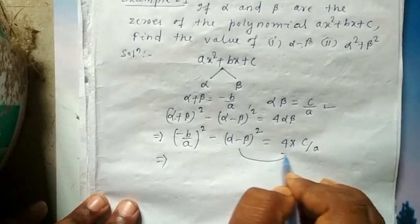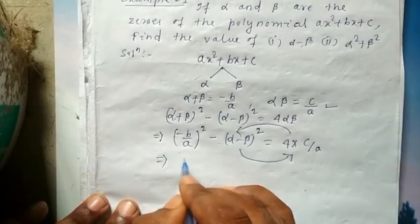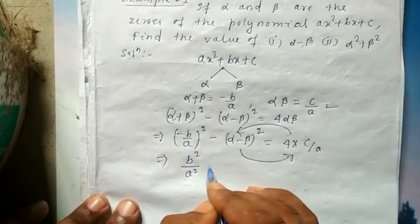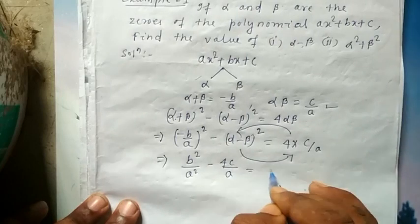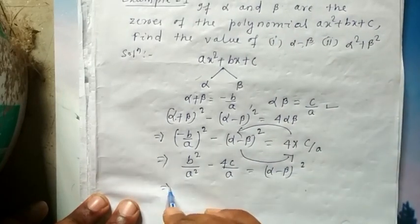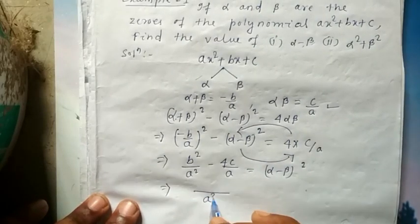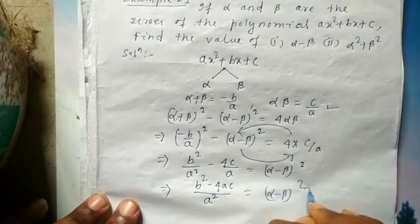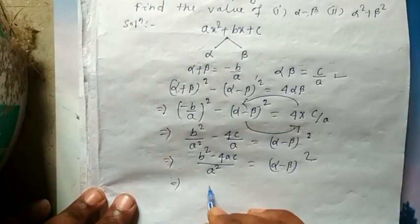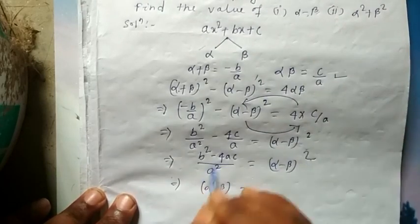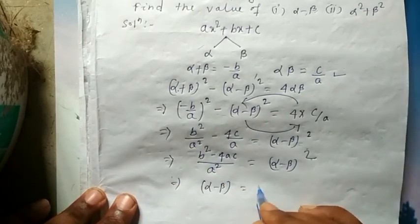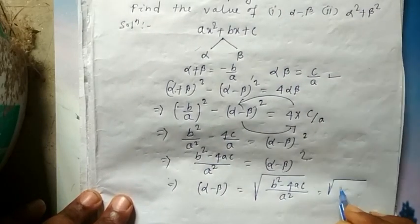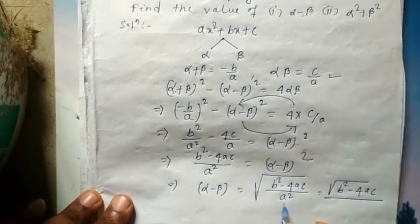That implies, moving (α-β)² to the other side: (-b/a)² = b²/a², so b²/a² minus 4c/a = (α-β)². Taking LCM as a²: (b²-4ac)/a² = (α-β)². That implies α-β = √(b²-4ac) / √(a²), which gives α-β = √(b²-4ac) / a.